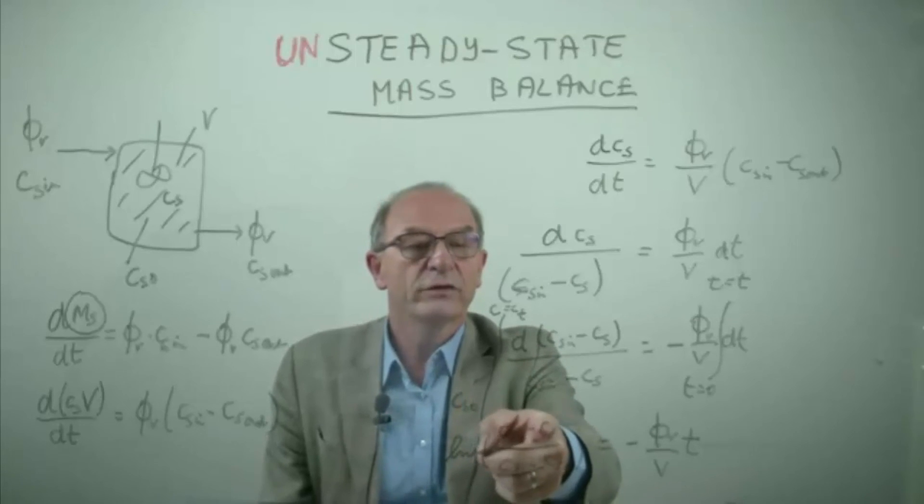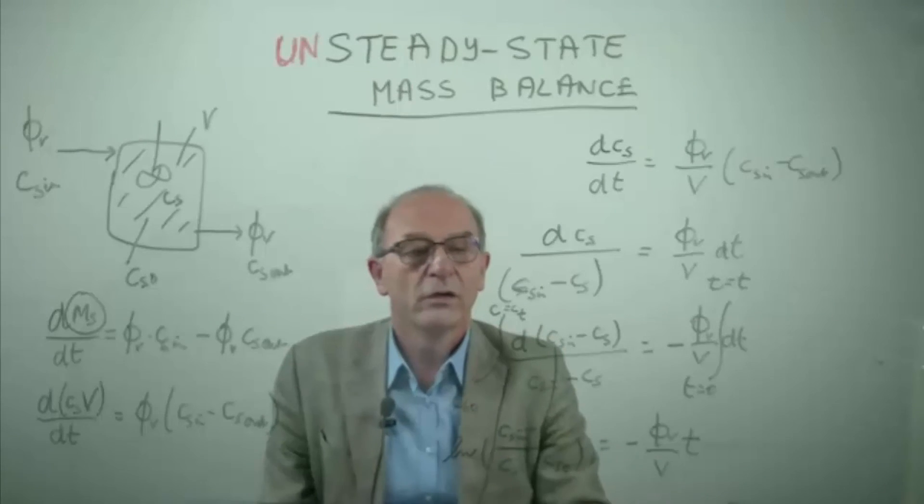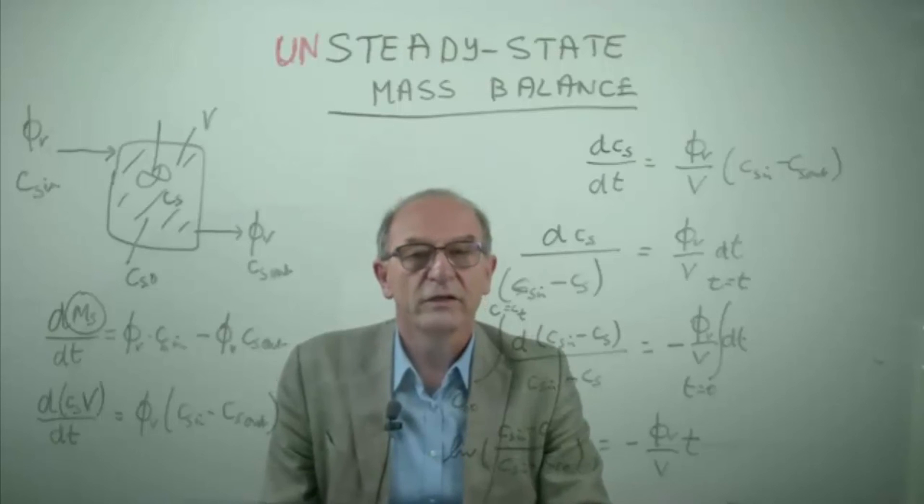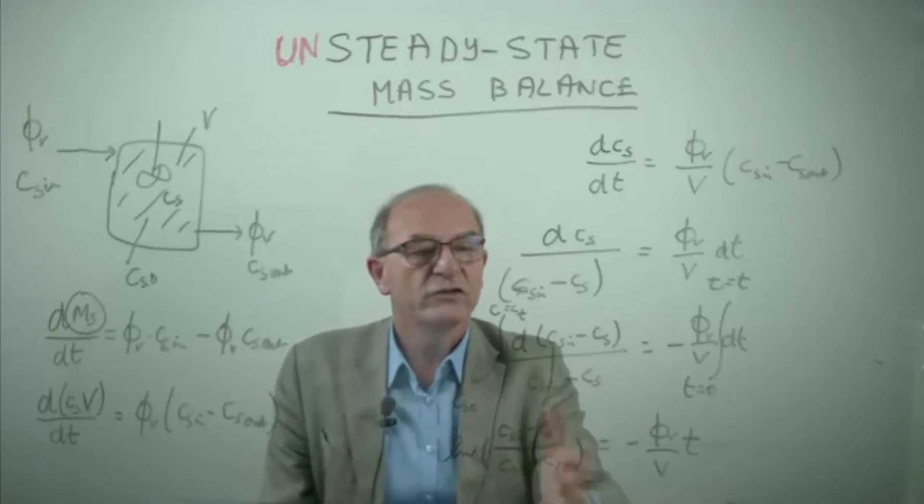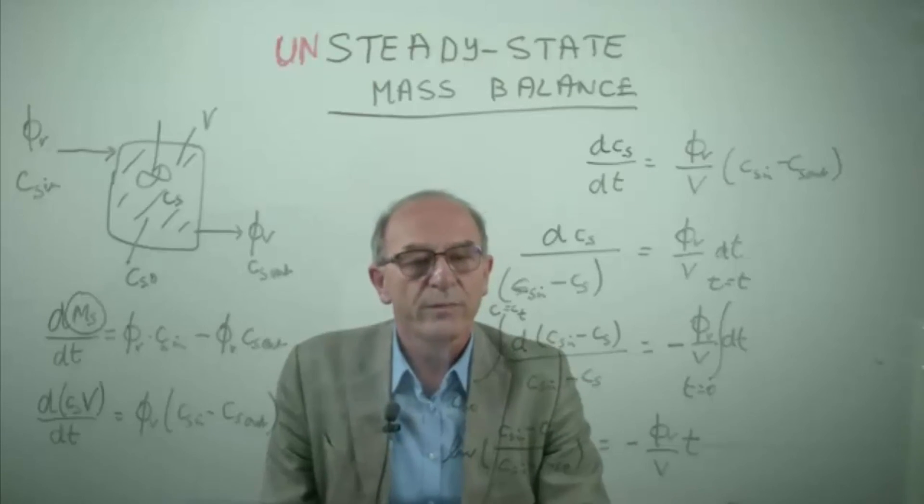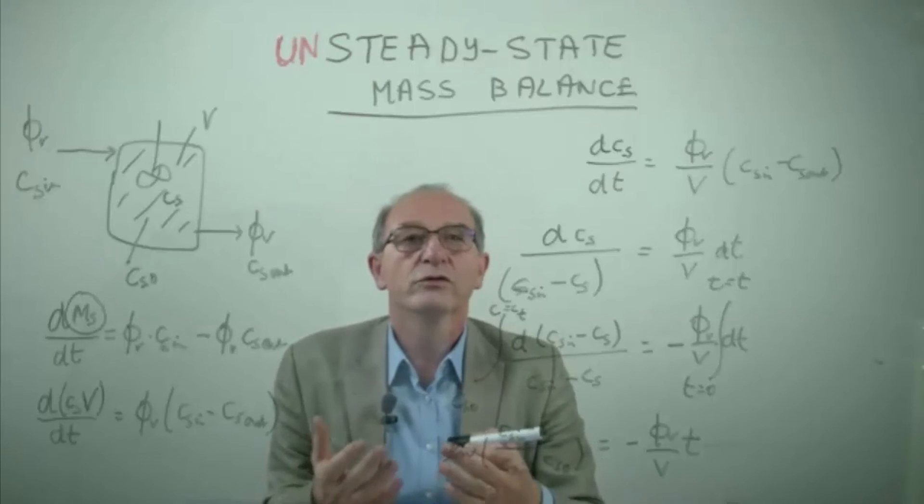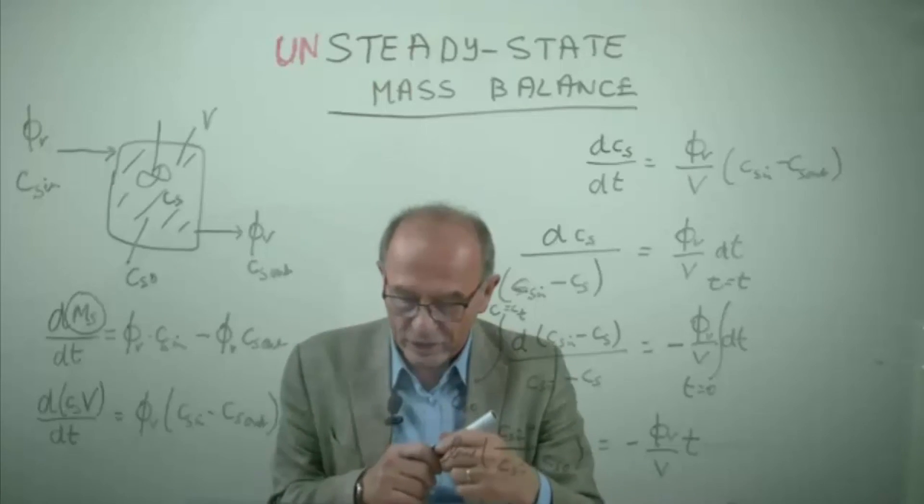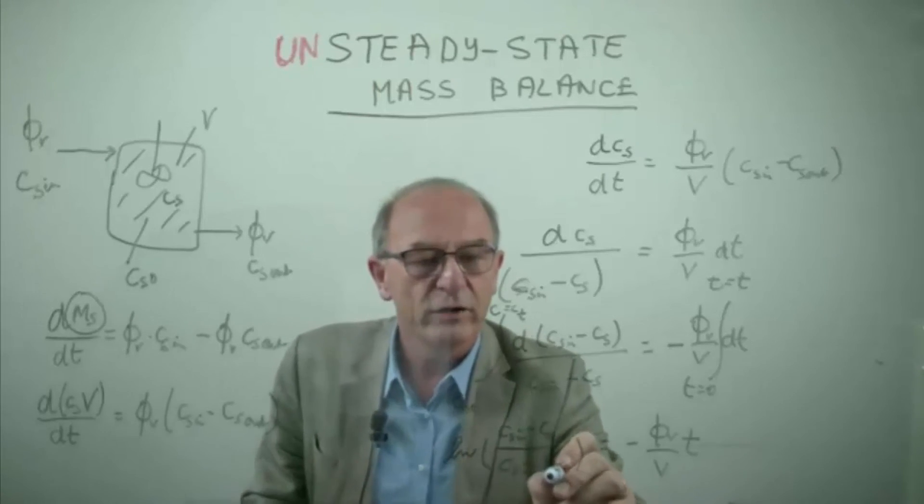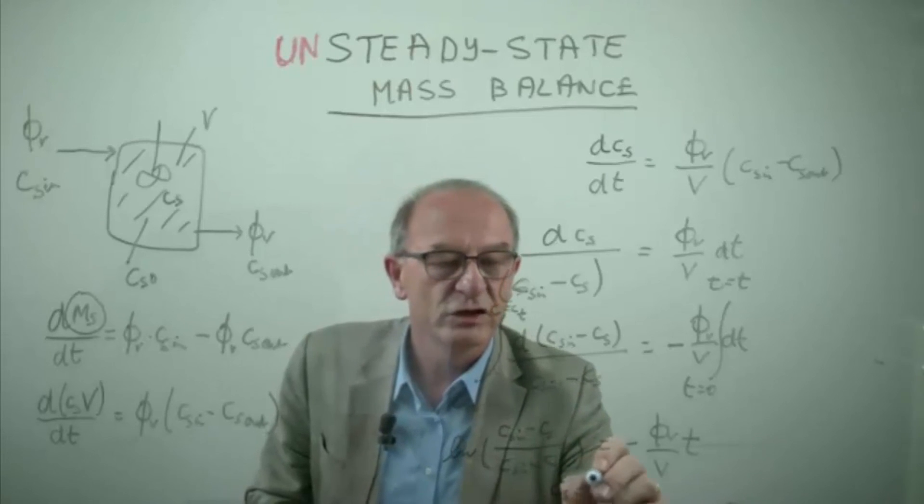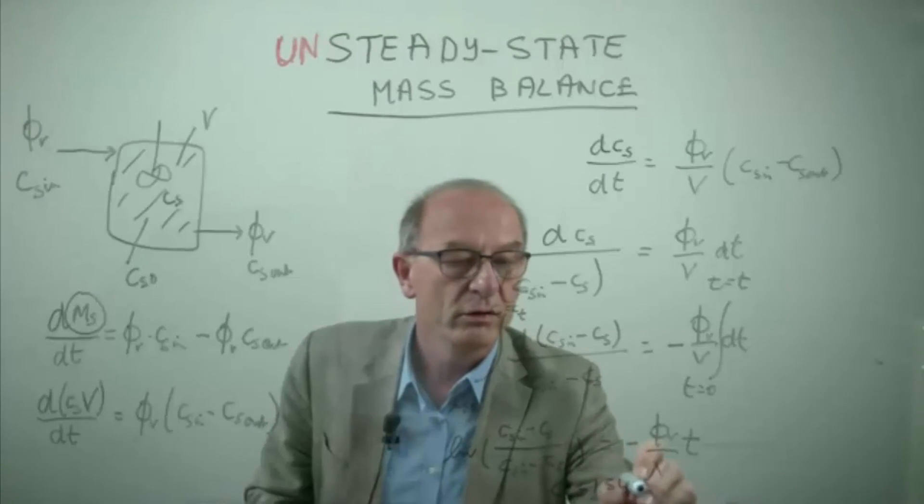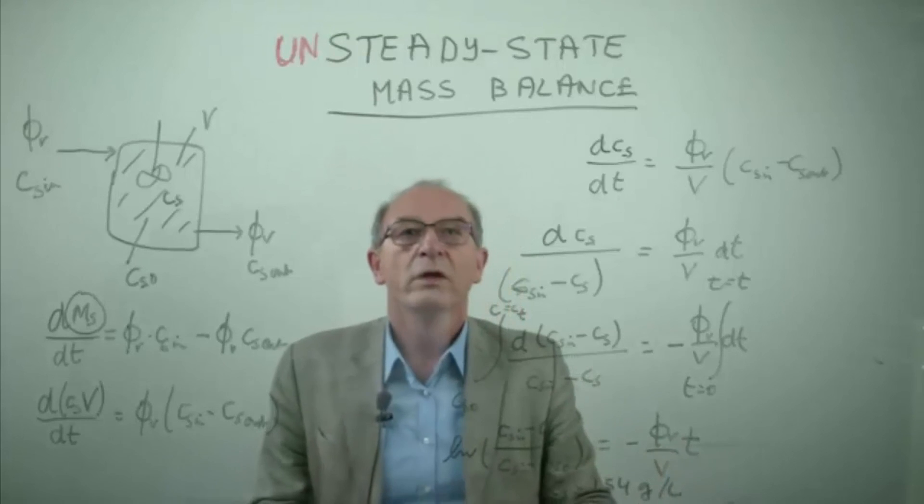And in principle the solution of the problem is here. We have now to get out the concentration C_s by writing it in a different way. If you substitute the values of the example you get a final concentration C_s which is 1.54 grams per liter.